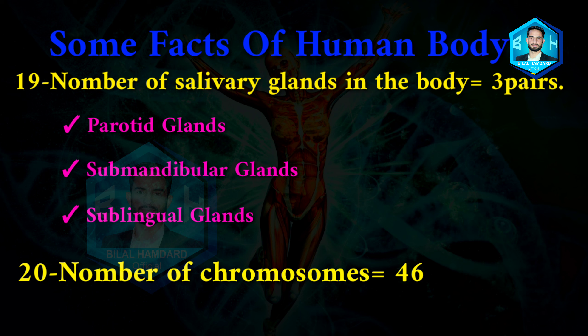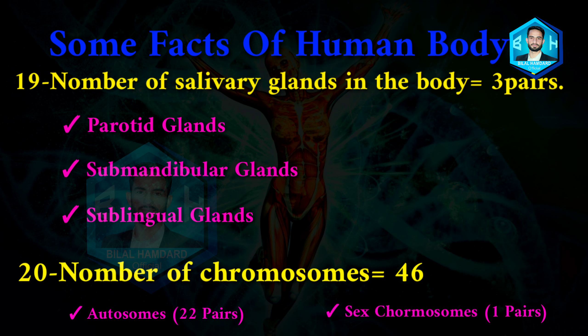Number twenty: total number of chromosomes is 46, which is divided into 44 autosomes and 2 sex chromosomes.